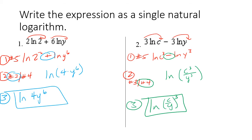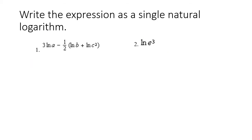Let's keep going with a bigger expression — writing the expression as a single natural log, working left to right as you read a book. Notice that this one-half is going to be distributed to each term, so we're really working with three natural log a minus one-half natural log b, minus one-half natural log c squared.